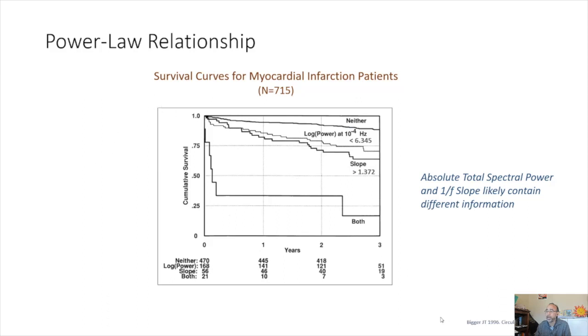This is a graph that came, again, from that same publication by Bigger et al. in 1996. This is a survival graph for the MI group, which numbered 715. And we see here that for those individuals that had both high heart rate variability power and a normal slope which resembled pink noise, they had higher survival overall and lower mortality, whereas those individuals with low heart rate variability power had worse mortality. And the same also applied to those with a slope, a power law slope greater than 1.372. A combination of both these factors, total power and power law slope had much worse mortality overall. And this indicates to me that absolute total power and 1 over f slope likely contains different information, and the combination of both may be clinically useful.